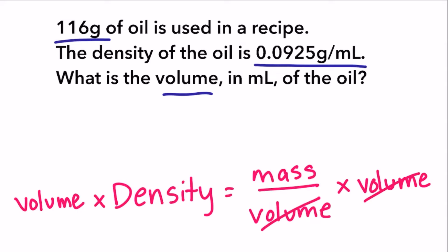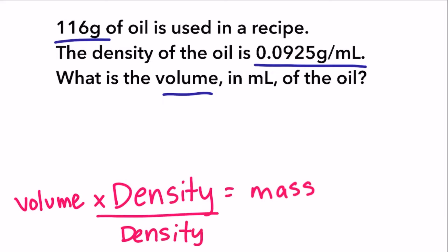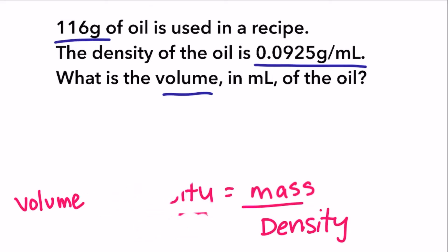Volume cancels out. Now volume and density are being multiplied. So to get volume by itself, we divide by density on both sides. Finally, we have volume equals mass over density.